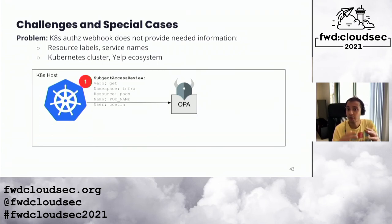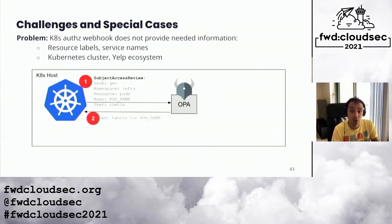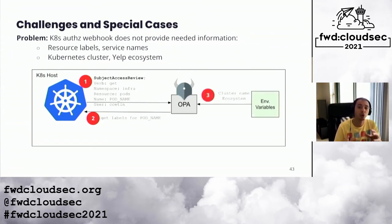One major challenge was that the Subject Access Review did not contain enough information for us to make least-privilege decisions. For example, we didn't have the service name we used for team-based authorization. As a solution, for each authorization request OPA reaches out to the kube-apiserver with the resource name and gets the resource labels including the service name. OPA also reads environment variables from the host to make authorization decisions based on the Kubernetes cluster or Yelp ecosystem context.